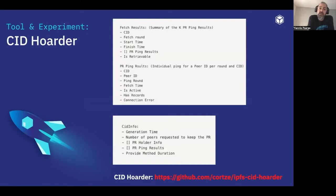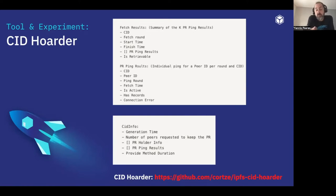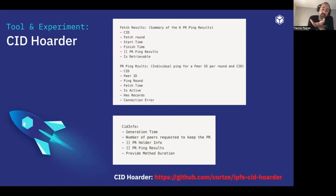What we did is that Mikael built what is called the CID Hoarder — you can find the URL on GitHub — which is a tool that produces content, produces CIDs, and produces the provider records of those CIDs. It stores them on the IPFS DHT, then monitors those specific nodes to see if they're still online, if they're providing the provider record, either serving it or not. There are several features, but that's the main functionality.